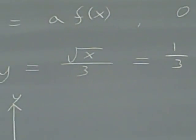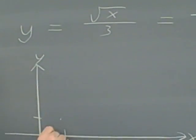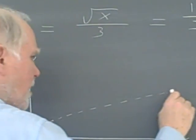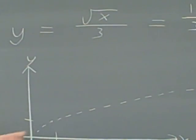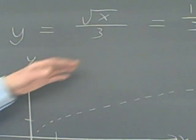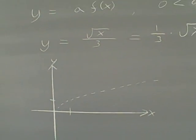So I'm going to first look at the square root of x. I'm going to put that in a dotted line. And then I'm going to say, well, what happens to it when you multiply it by 1 third?